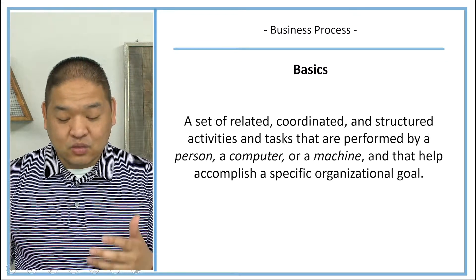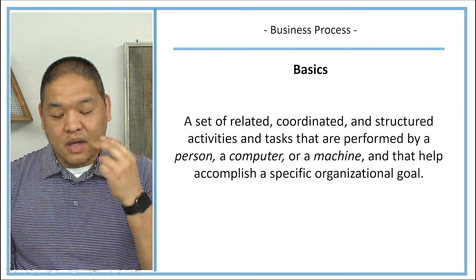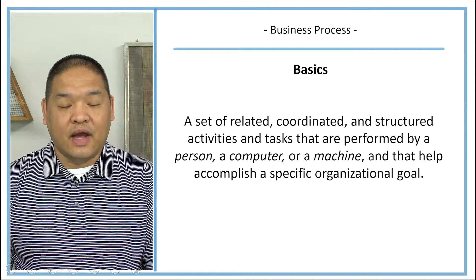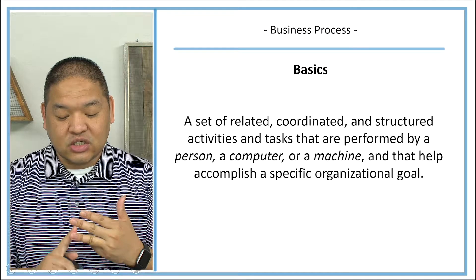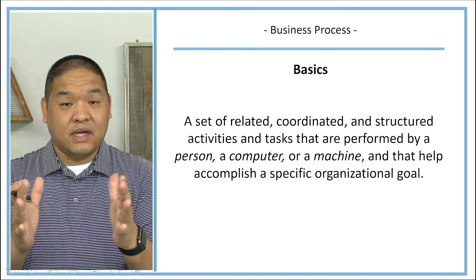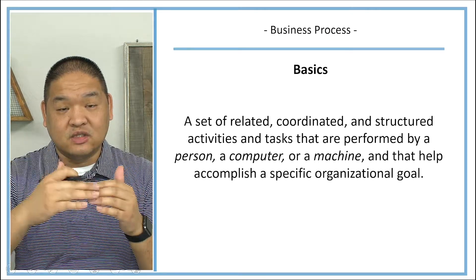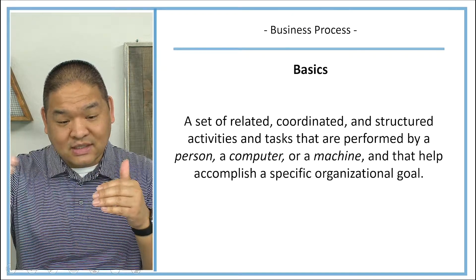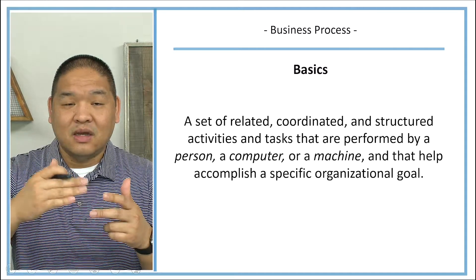What is a business process? It is a set of related, coordinated, and structured activities and tasks that are performed by a person, a computer, or a machine, and that help accomplish a specific organizational goal. There is a lot to this definition, so let's break it down. These tasks are put together and coordinated — they are related in the reason why we group them into this business process.